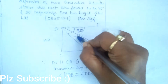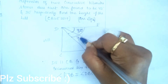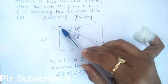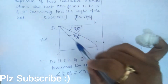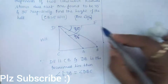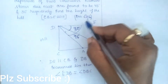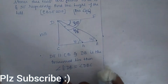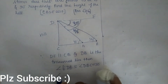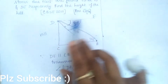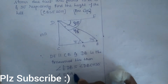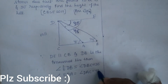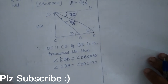So this angle will also be 30 degrees and this will also be 45 degrees by alternate interior angles. Angle DBC equals 30 degrees, and similarly angle EDA equals angle DAC equals 45 degrees by alternate interior angles.